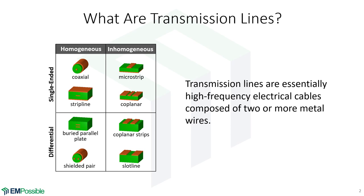One way to characterize these is differential versus single-ended. In a differential line, there are two perfectly symmetric wires — you can think of one as plus and one as minus. We have a buried parallel plate: two little flat strips of wire extending through the dielectric. There's also a shielded pair: two little wires embedded in a ground on the outside. There are slot lines — a real thin slot between two strips of metal — and coplanar strips, also sometimes called a differential pair.